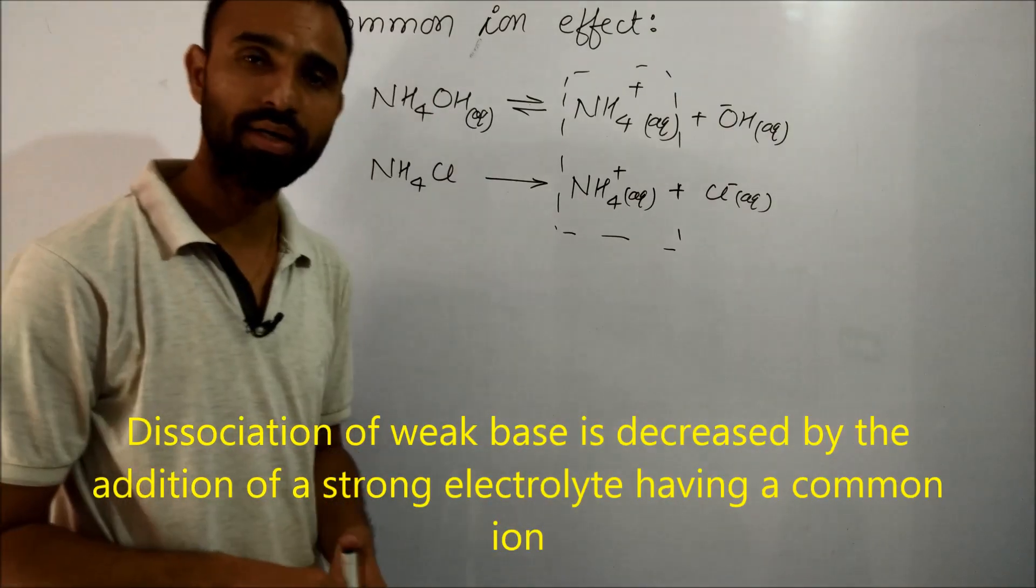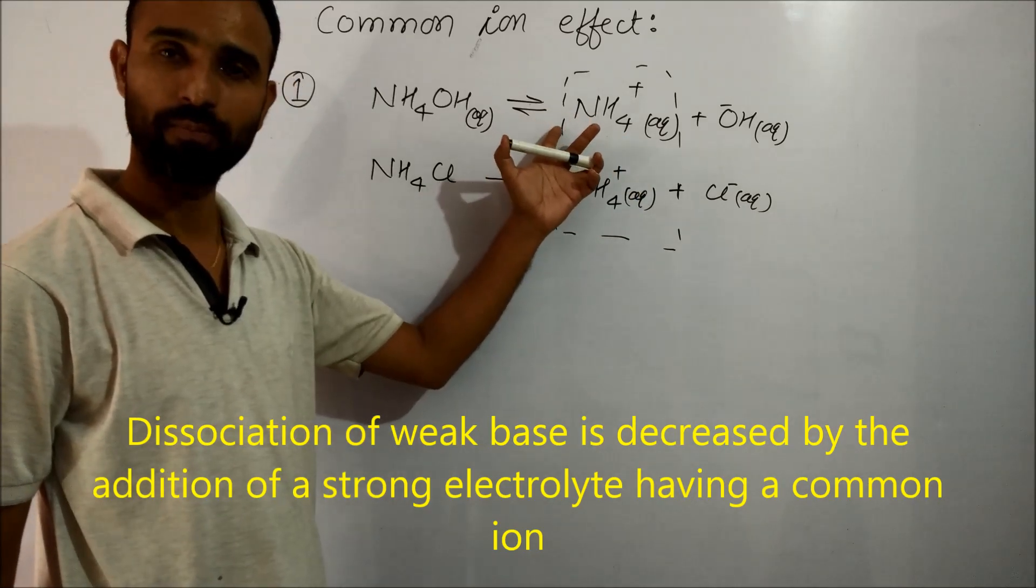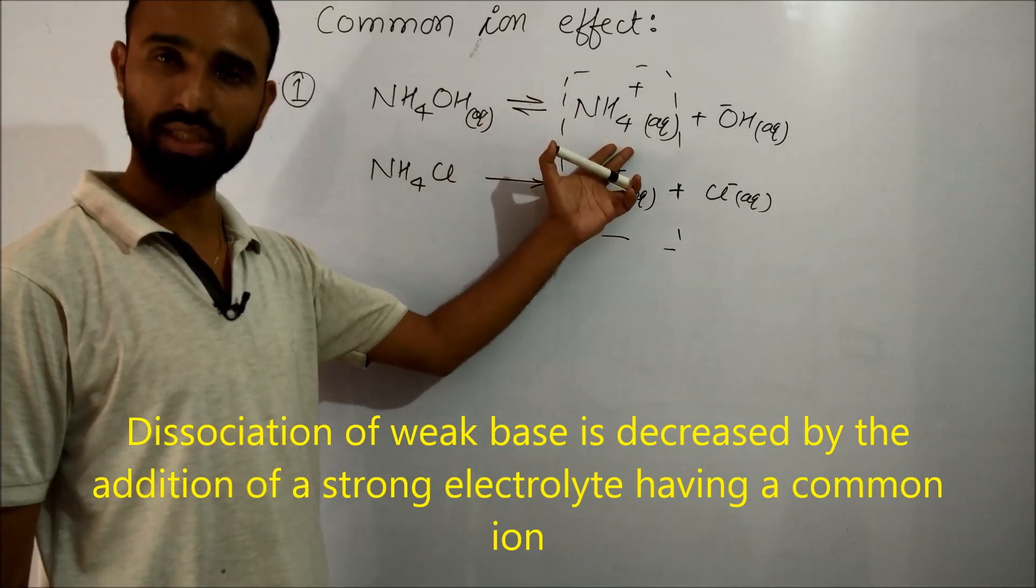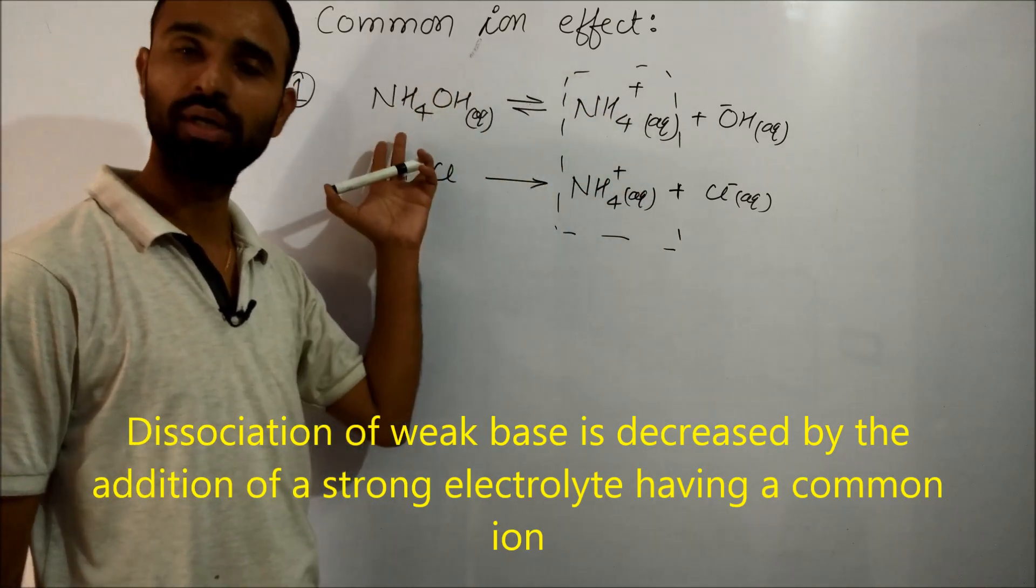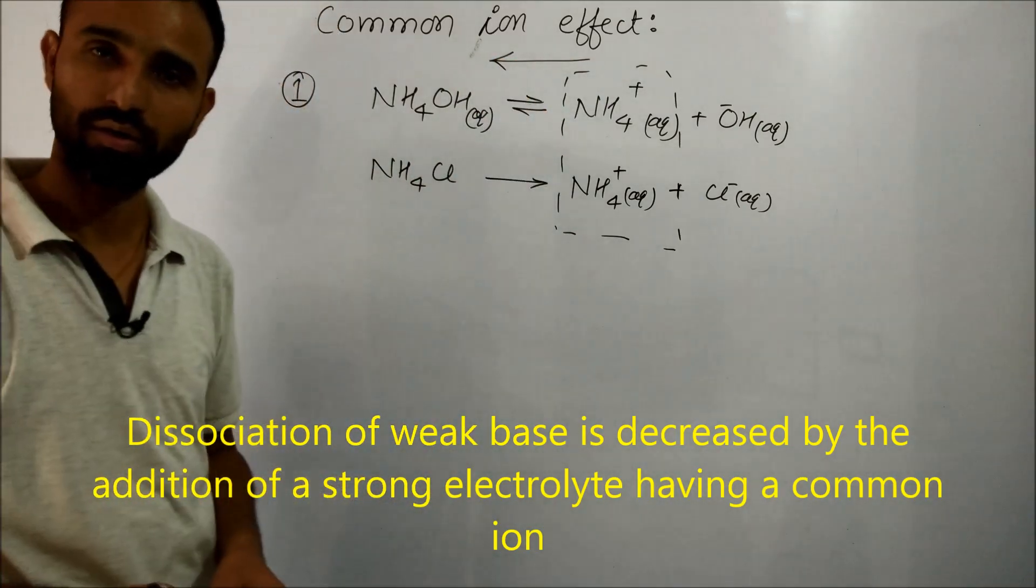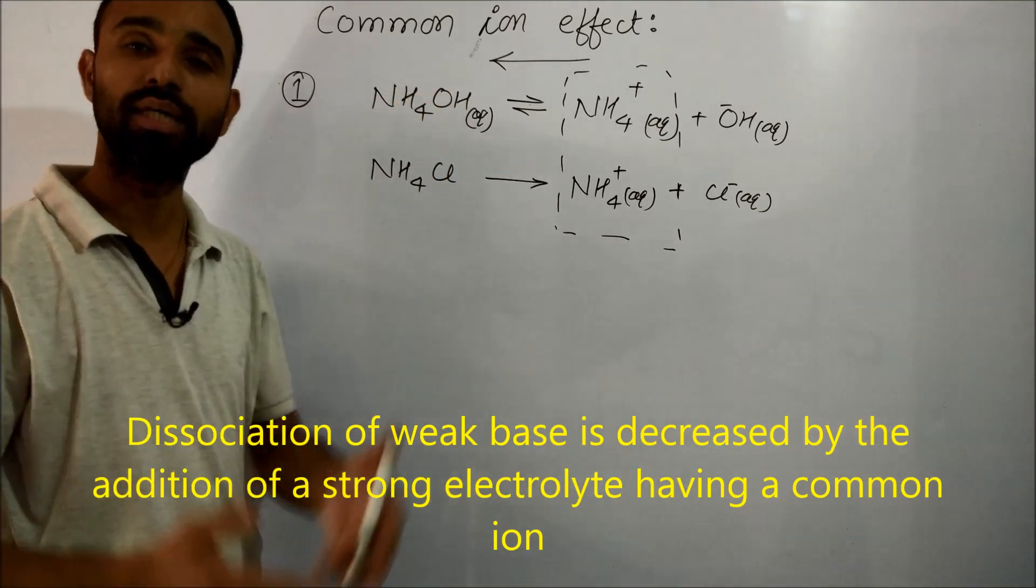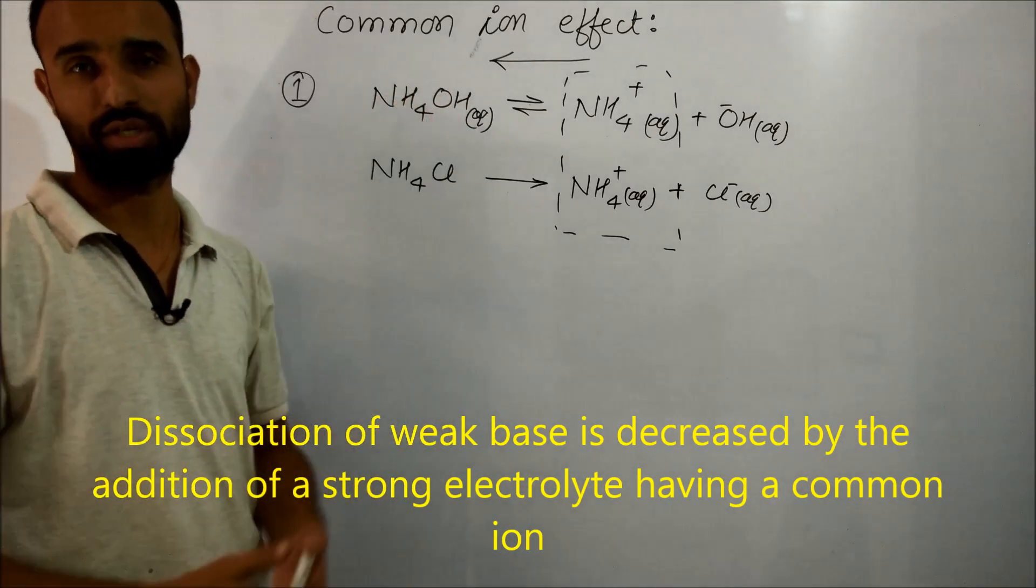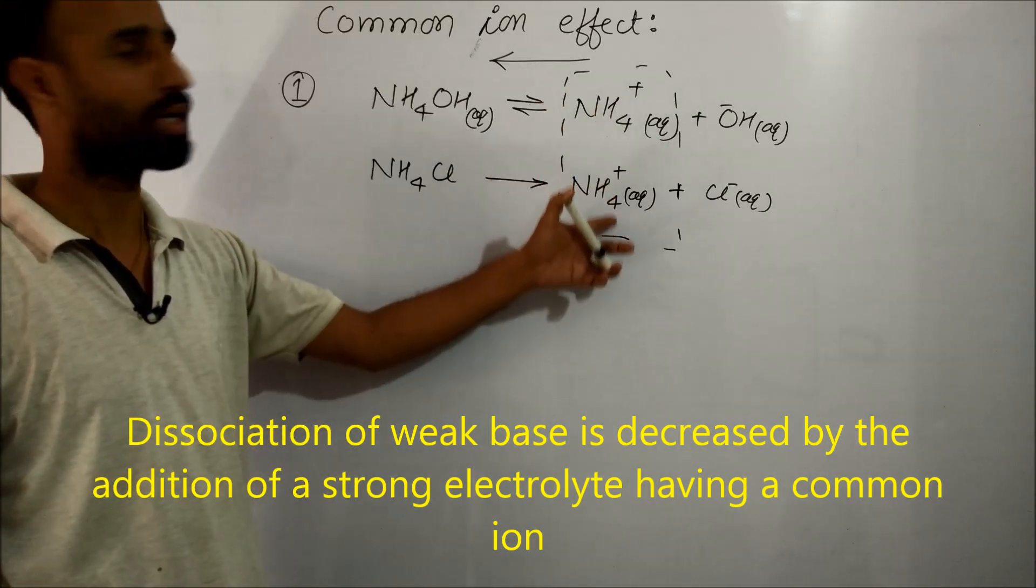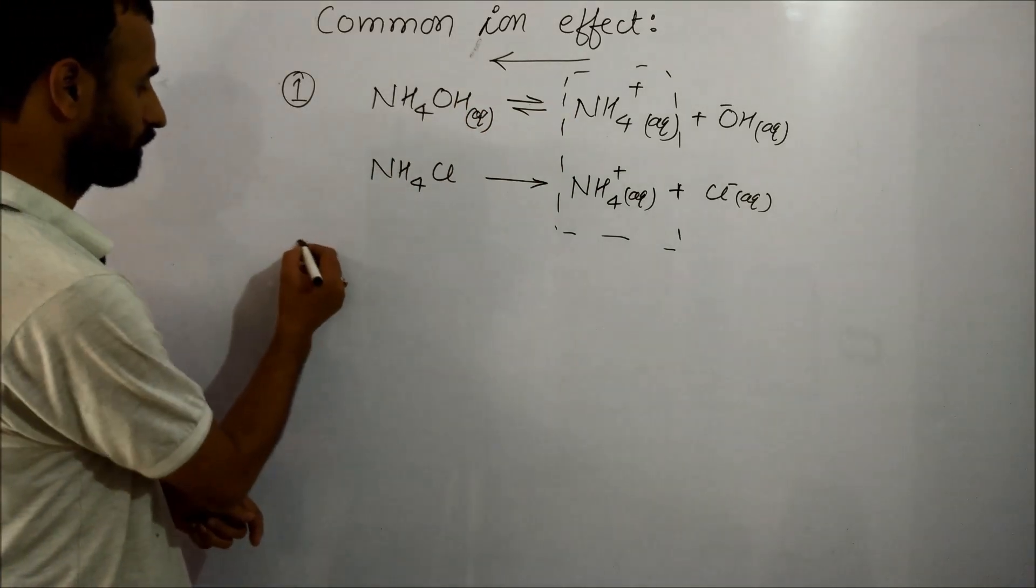If we add a strong electrolyte like ammonium chloride, it has a common ion, and due to the presence of common ion, one of the products is increased in the equilibrium. According to Le Chatelier's principle, if one of the products is increased, equilibrium shifts backward. So when this equilibrium shifts backward, dissociation of weak base is further suppressed, further decreased due to the presence of a common ion in the equilibrium.